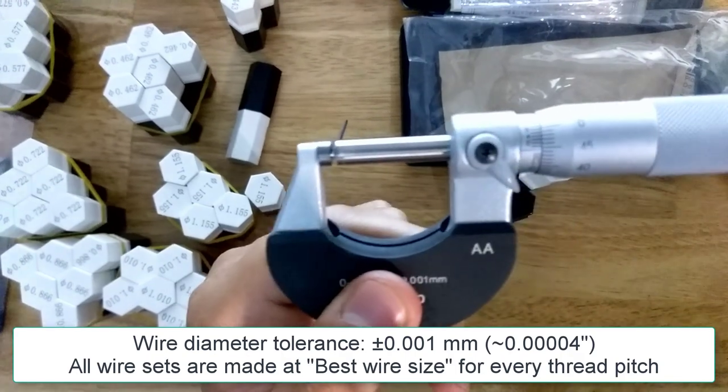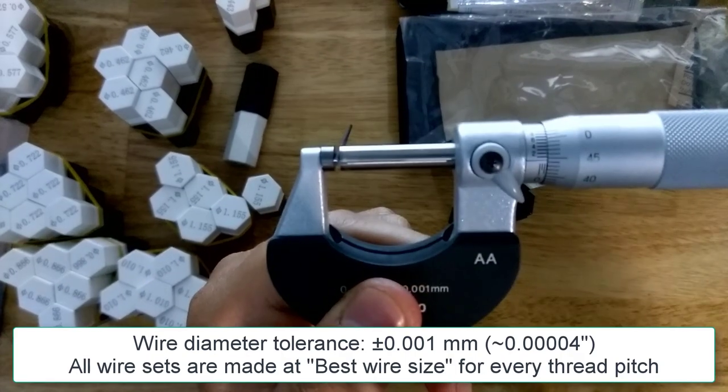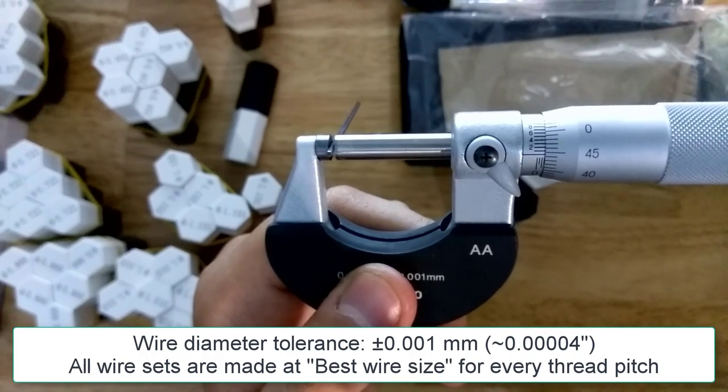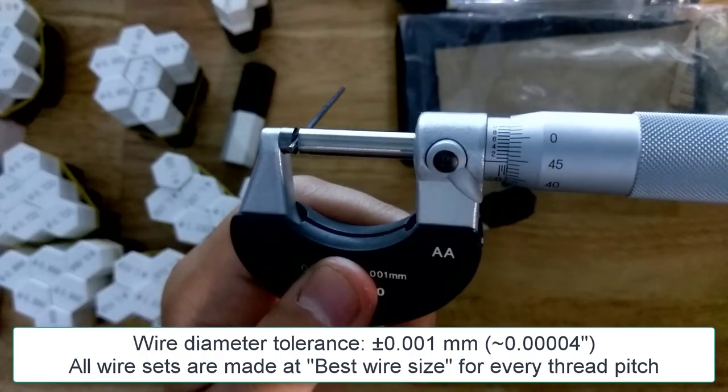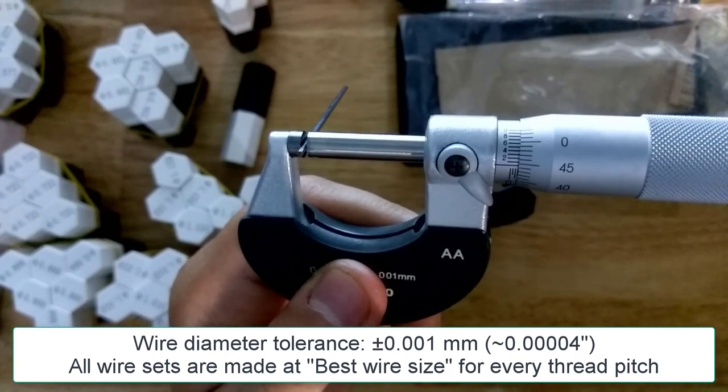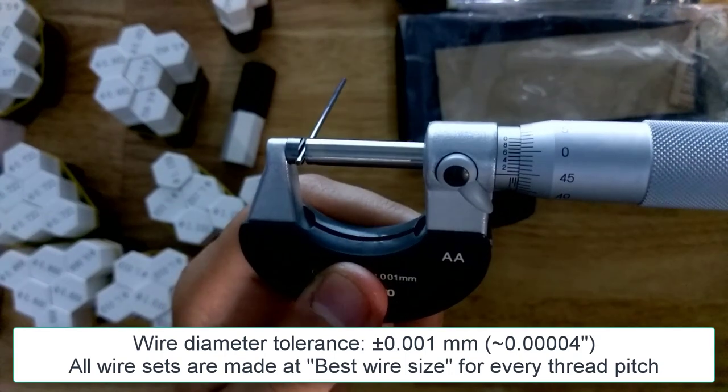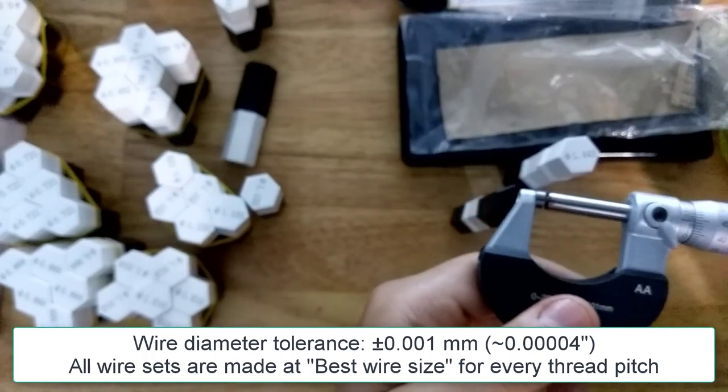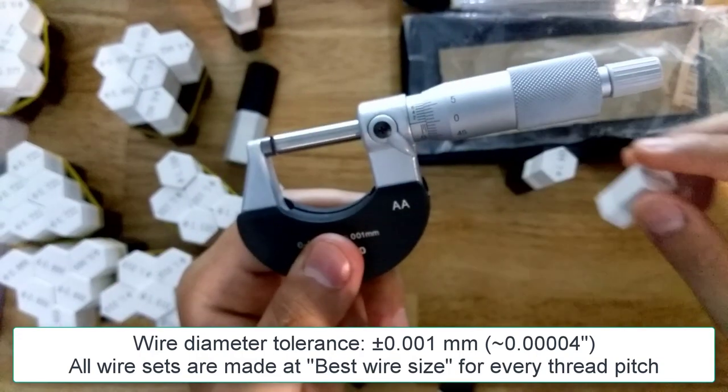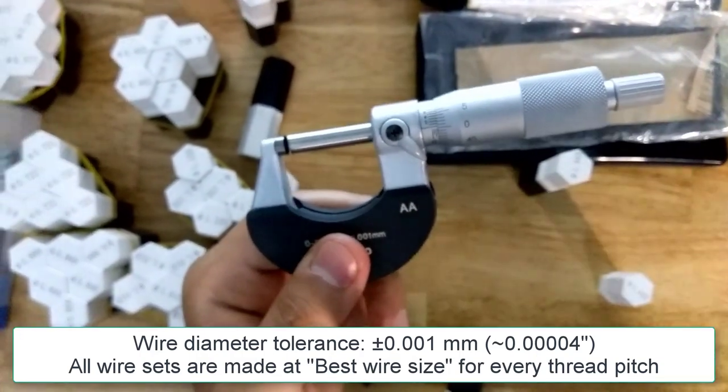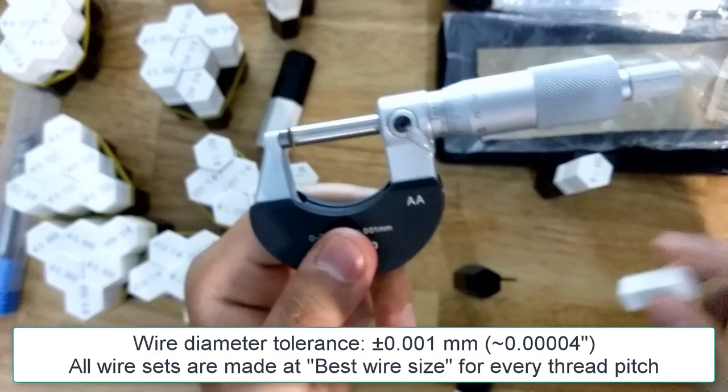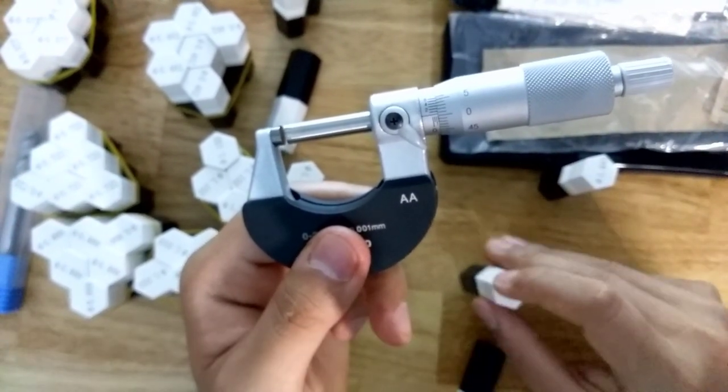Now I'm gonna check the diameter of the wire. This is 1.443 millimeter. All of my wires I make at the best wire size, so you just get it and you don't have to calculate anything for the best wire size because I already make it at the best wire size value for every pitch. You can see the value is quite precise. I can guarantee the precision is within plus and minus 0.001 millimeter.